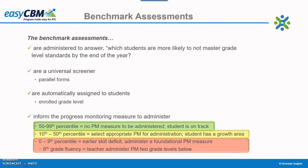If the student earns the 50th percentile or higher on that earlier skill, the student may simply need additional fluency building work. In that case, the teacher might provide the student with the next grade-level measure. If the student earns between the 10th and 50th percentile on the earlier skill, consider administering a progress monitoring measure one additional grade level below. 17 progress monitoring reading probes and 10 math probes are available per grade level for assessment in between the benchmarks to test the student's progress with defined interventions in place.